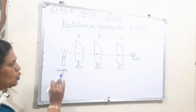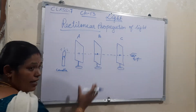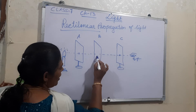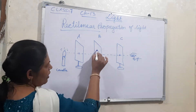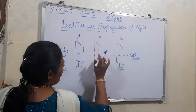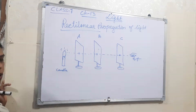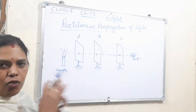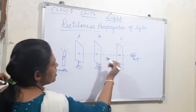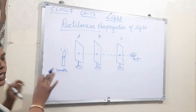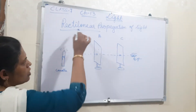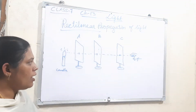If any one of the cardboards is disturbed — shifted here and there — its hole will move up or down, and then you cannot see the light because it is obstructed there. So from this activity, what we can say is that light travels in a straight line. That is rectilinear propagation of light.